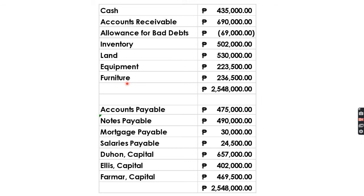Finally, for the statement of financial position — regardless of whether the bonus method is used or not — total assets remain 2,548,000. Liabilities include accounts payable, notes payable, mortgage payable, and salaries payable. Equity consists of the capital balances of Duhon, Ellis, and Farmer. A balanced statement confirms correct processing.